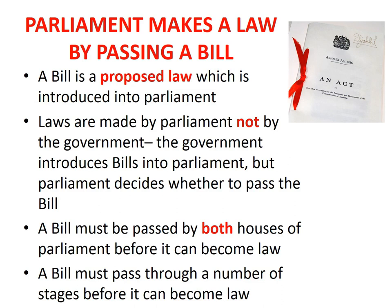Second, laws are made by Parliament, not by the government. The government introduces bills into Parliament, but it is Parliament which decides whether to pass those bills — that is, whether a bill should become a law. It does this by passing the bill so that it then becomes an act. Third, a bill must be passed by both houses of Parliament before it can become a law. For a proposed Commonwealth law, the bill must be passed by both the House of Representatives and the Senate. For a Victorian law, the bill must be passed by the Legislative Assembly and the Legislative Council.